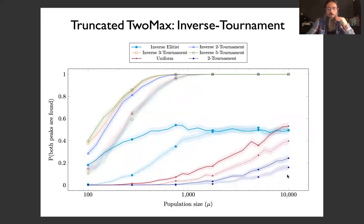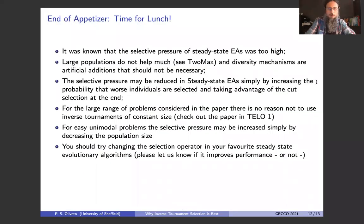What about truncated TwoMax? While the positive selection behaves the same, inverse selecting the worst has only about a probability of a half of finding both peaks, while the inverse tournament selection operators perform very, very well. So, end of the appetizer. What we've argued is that it was already known that selective pressure of steady-state EAs was too high, but what we argue in this paper is that with such high selective pressure, large populations do not help much, and that diversity mechanisms should not be necessary as artificial additions that should not be required in an evolutionary process. What we show is that the selective pressure may be reduced simply by increasing the probability of selecting the worst individuals and taking advantage of the fact that we've got cut selection at the end.